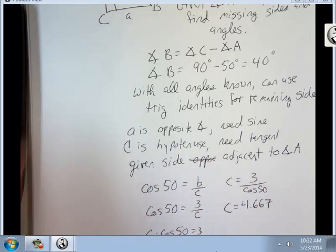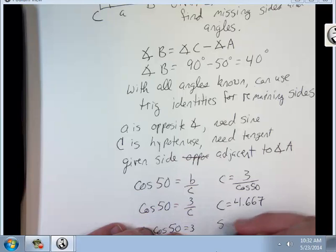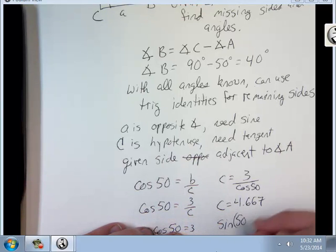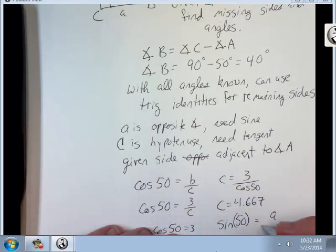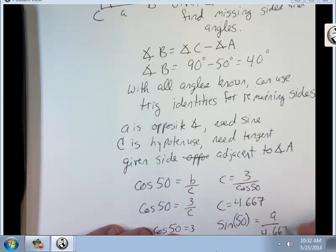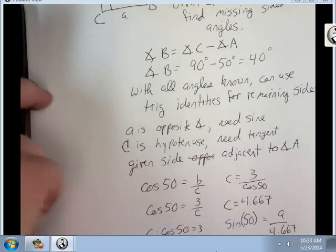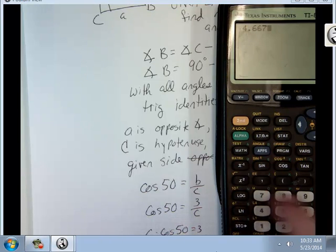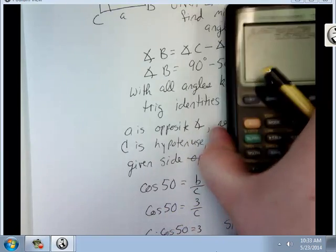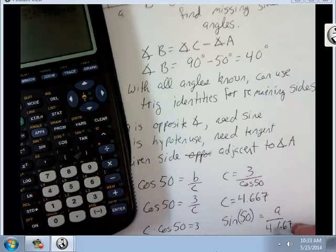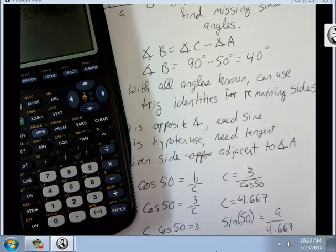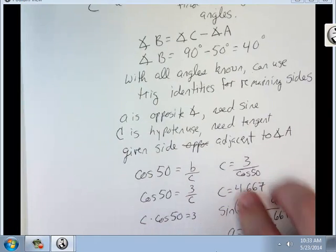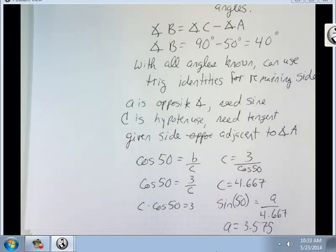Now I can do sine of 50 equals A over 4.667. So 4.667 times sine of 50 equals 3.575. And lo and behold, I now have all my sides and angles. Alright, we're going to do another example of this. Hopefully it comes out a little bit smoother.